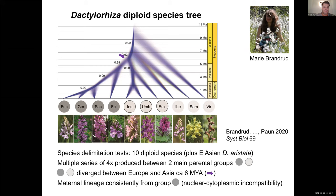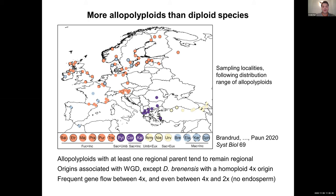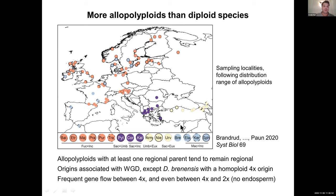Looking at the polyploids, you can see different sampling localities from our recent paper, which roughly follow the distribution range of each polyploid lineage. There are many more polyploid lineages than diploid lineages in this genus. We observe that if a polyploid has at least one parent that tends to be regional, the polyploid also tends to remain regional. In Dactylorhiza, polyploids do not generally have larger distribution ranges than the diploids, which is actually atypical for polyploids.